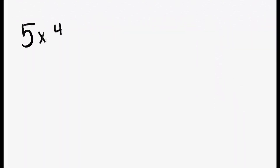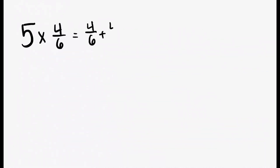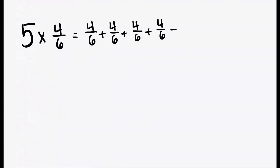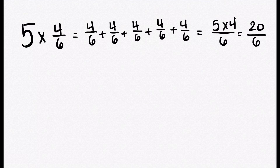So let's try 5 times 4 sixths. That means 4 sixths 5 times: once, 2 times, 3 times, 4 times, and 5 times. So now we can do 4 plus 4 plus 4 plus 4 plus 4, or we can do 5 times 4, which is going to be 20 over 6. And we know that 20 over 6 is an improper fraction.